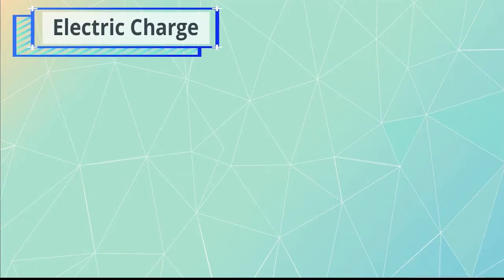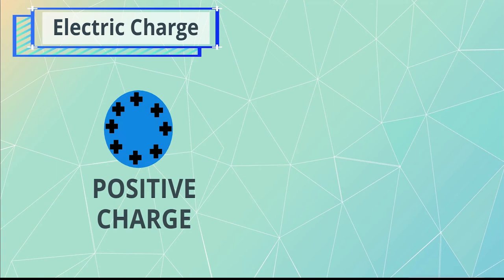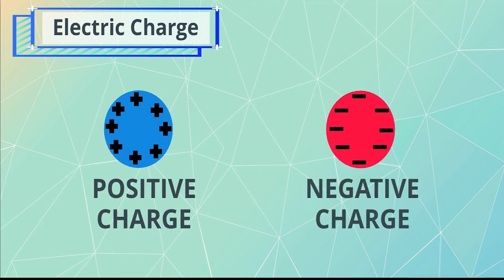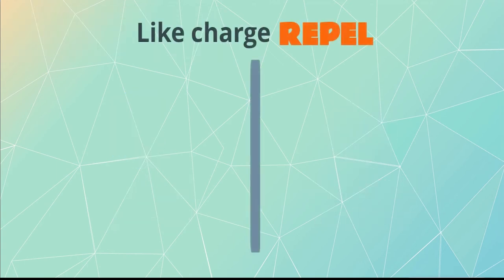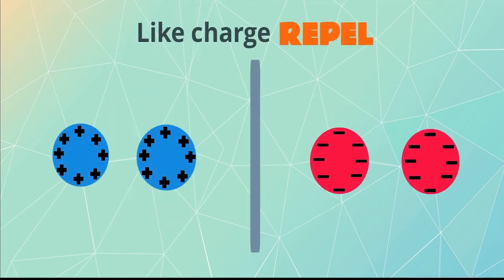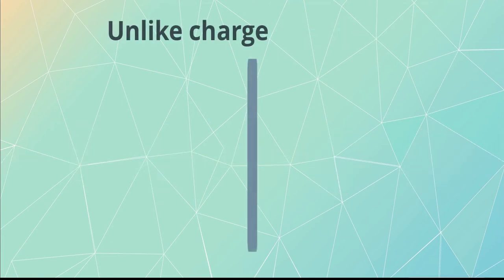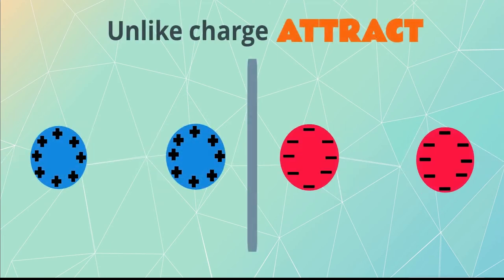There are two kinds of electric charge, namely the positive charge and the negative charge. Same charges repel each other, while unlike charges attract each other.